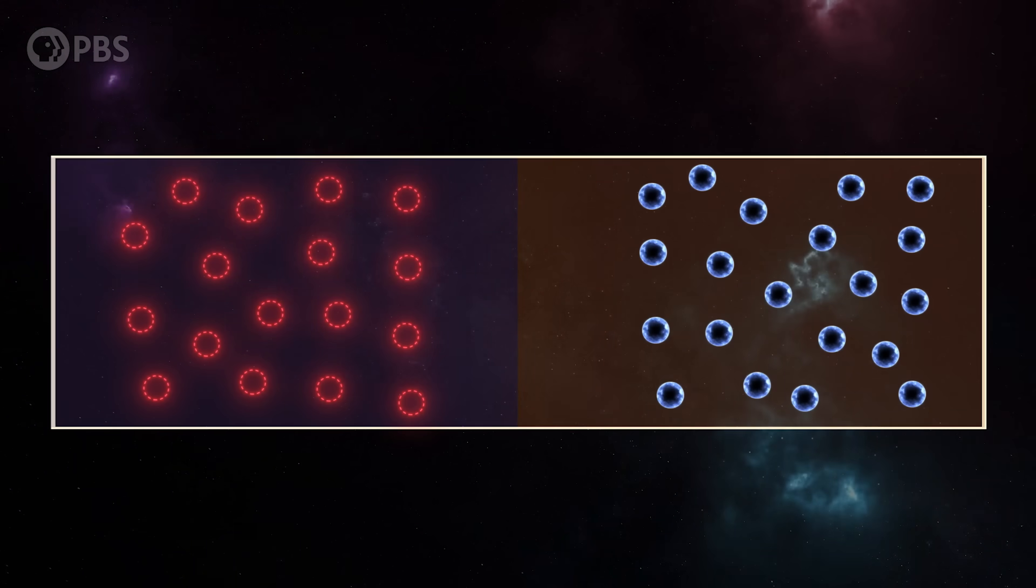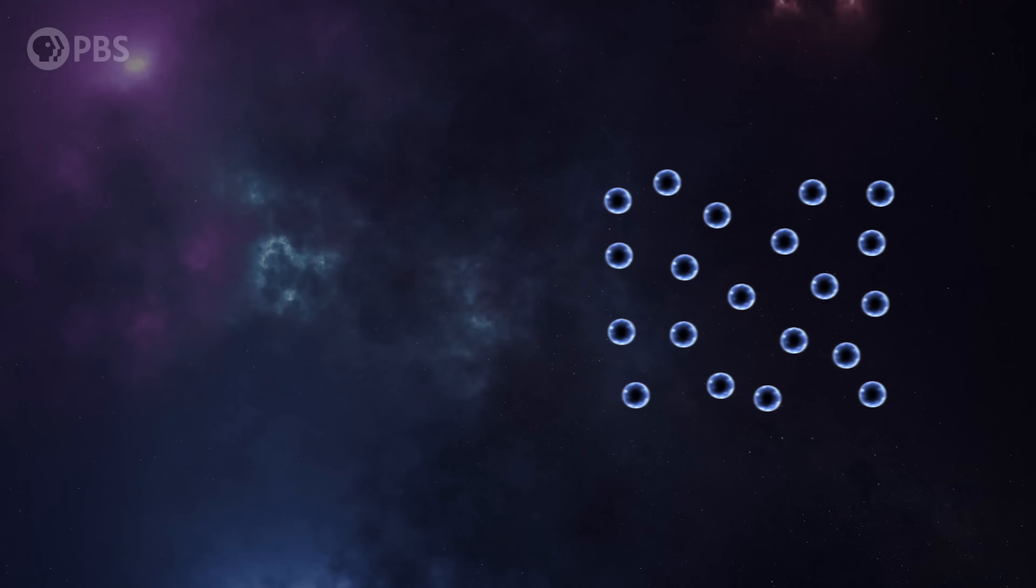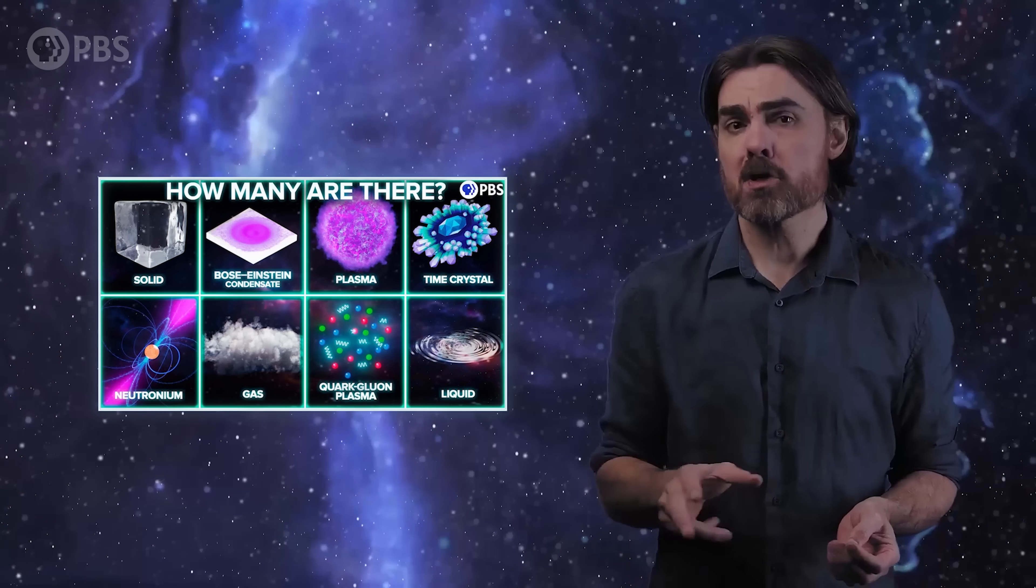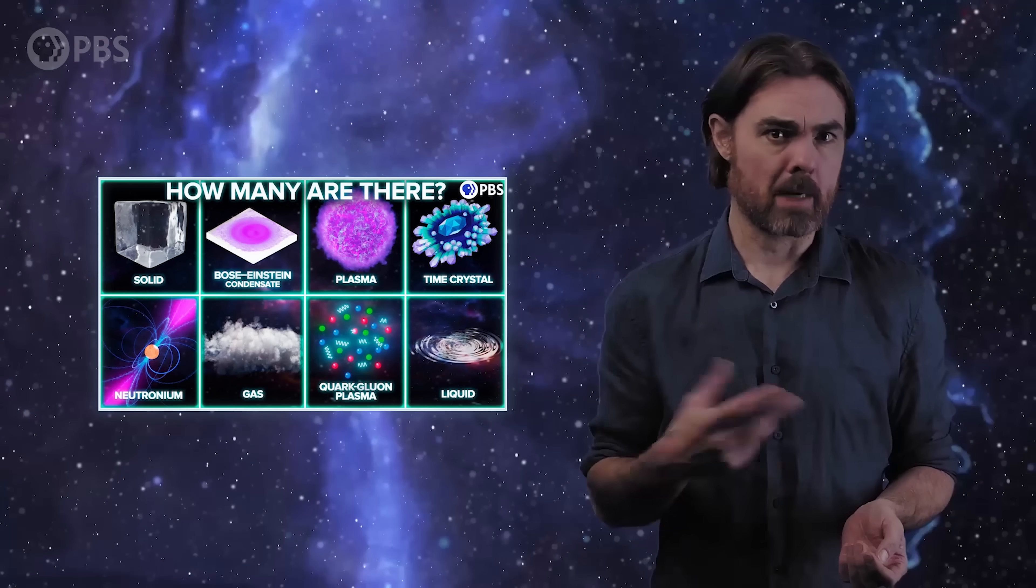Now you might argue that electron holes are just a convenient way of looking at things, but that they aren't real like electrons are. After all, if you melt the silicon, the electrons still exist, but the holes don't. In a sense, that's right. Quasiparticles are emergent from the behavior of a particular configuration of matter, just like states of matter, which we talked about previously. But at the very least, quasiparticles make it much easier to model certain physical processes like semiconductor junctions, and in other cases they are indispensable.